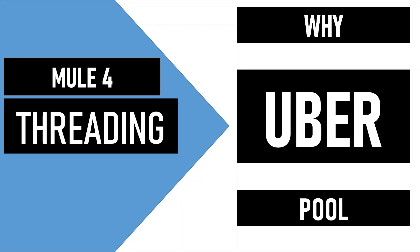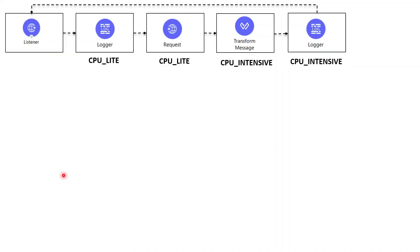Mule Runtime 4.3 brought performance improvements in terms of thread pools. This is the version where the three thread pools — CPU Light, CPU Intensive, and Blocking I/O — were merged into a single uber pool. Ever wondered why this change was done? Let's try to find out the reason in this video. Here is a typical flow to understand the problem.